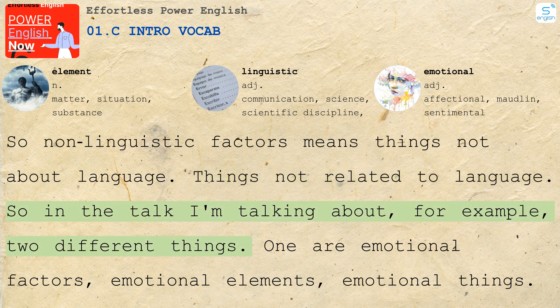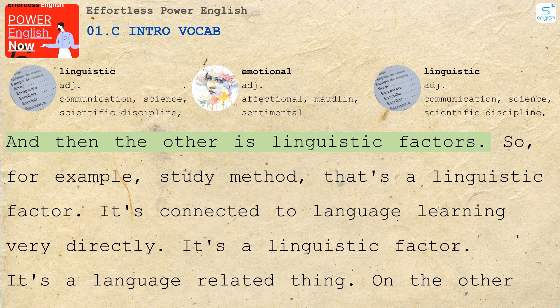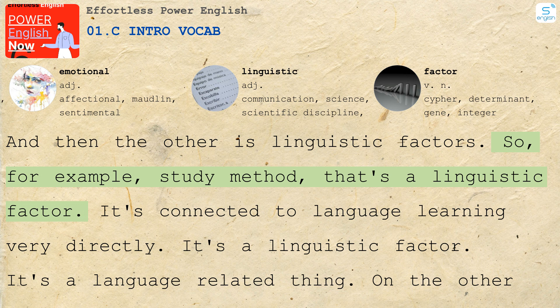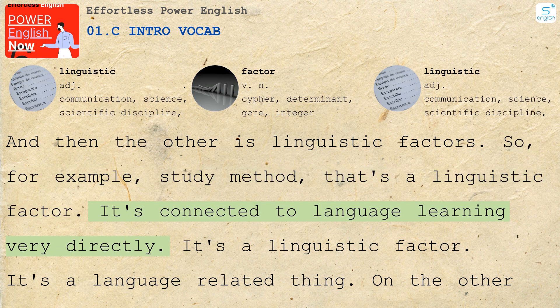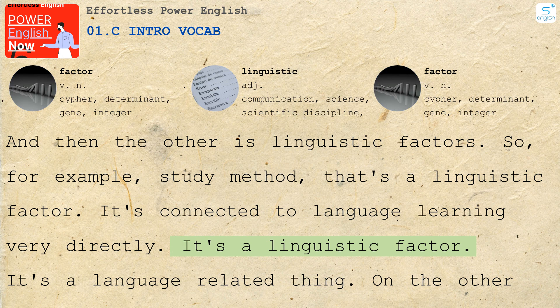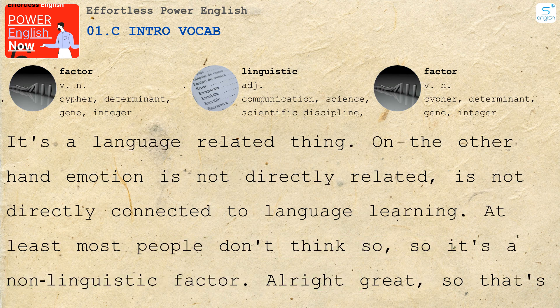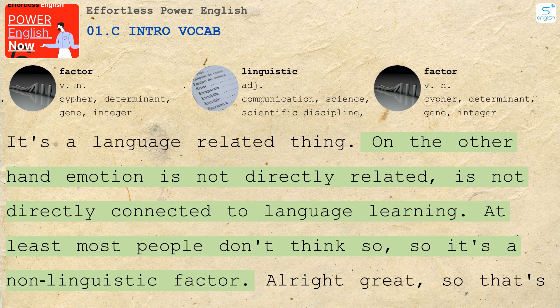So, in the talk I'm talking about, for example, two different things. One is emotional factors, emotional elements, emotional things. And then the other is linguistic factors. For example, study method — that's a linguistic factor. It's connected to language learning very directly. It's a language-related thing. On the other hand, emotion is not directly related, not directly connected to language learning. At least most people don't think so. So it's a non-linguistic factor.